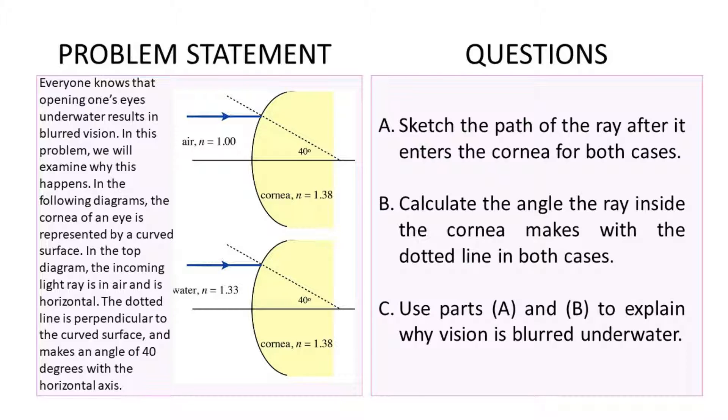Everyone knows that opening one's eyes under water results in blurred vision. In this problem we will examine why this happens. In the following diagrams the cornea of an eye is represented by a curved surface. In the top diagram the incoming light ray is in air and is horizontal. The dotted line is perpendicular to the curved surface and makes an angle of 40 degrees with the horizontal axis. What we want to do is sketch the path of the ray after it enters the cornea, calculate the angle the ray inside the cornea makes with the dotted line, and use parts A and B to explain why vision is blurred underwater.